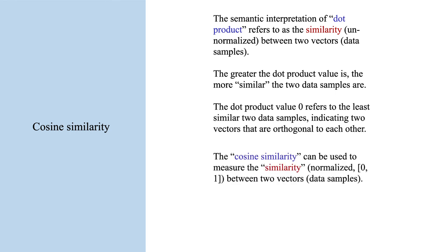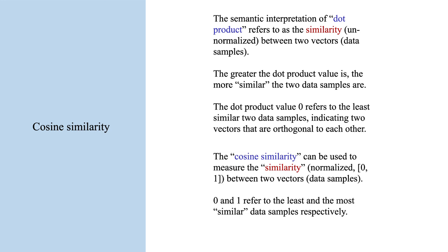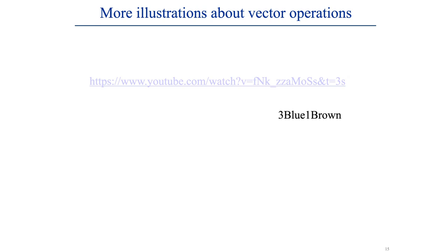To recap: the dot product is a similarity measure between two vectors that includes their magnitudes. Two vectors most close to each other will have large values of dot product, and if normalized it goes between zero and one; if not normalized, it can take on other values. Cosine similarity, however, is always between zero and one and only cares about the direction of the vectors — it ignores their magnitudes. In all cases, zero is least similar and one is most similar. If this became confusing, please check out the YouTube 3Blue1Brown.